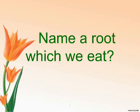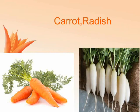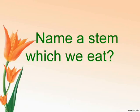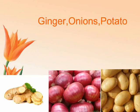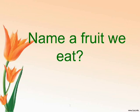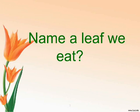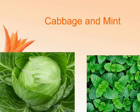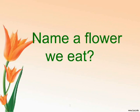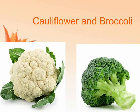Name a root which we eat? Carrot, radish. Name a stem which we eat? Ginger, onions, potato. Name a fruit we eat? Apple and mango. Name a leaf we eat? Cabbage and mint. Name a flower we eat? Cauliflower and broccoli.